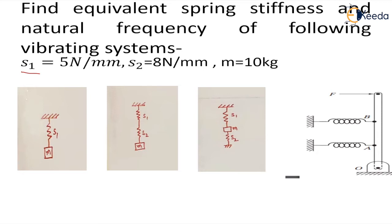There are four questions given in which you have to find the equivalent spring stiffness. When a system has more than one spring, the stiffness and its effect — the kind of resistance offered — varies for different systems. The values of spring stiffness for the two springs are: S1 = 5 N/m, S2 = 8 N/m, and the mass being suspended is 10 kg for the first, second, and third cases.